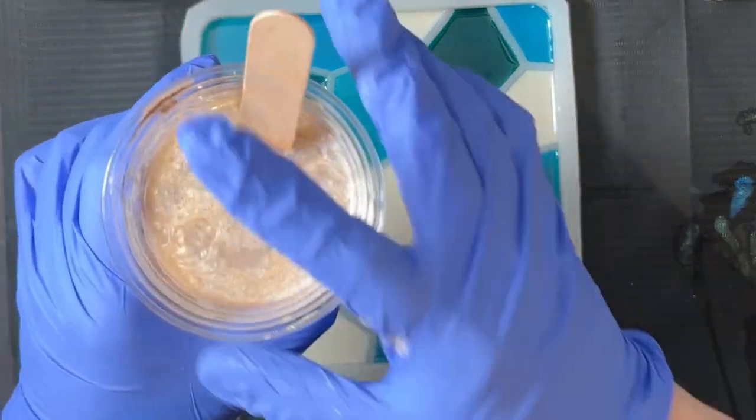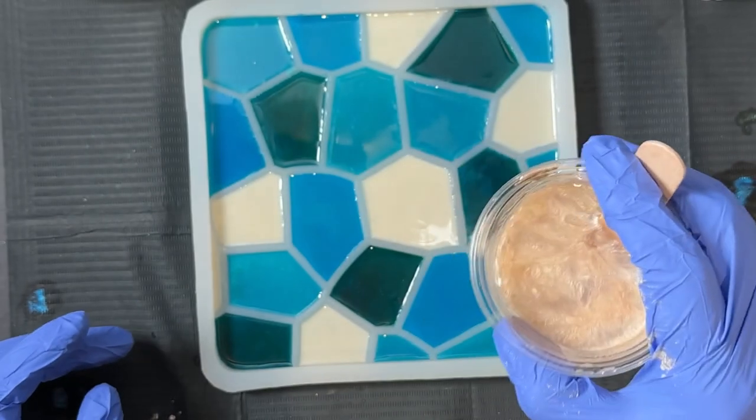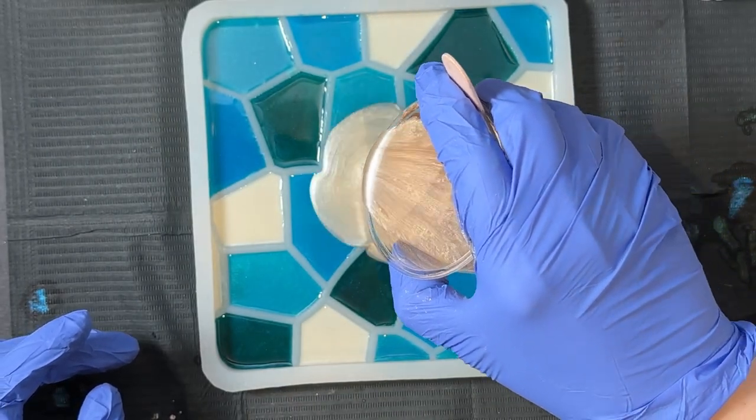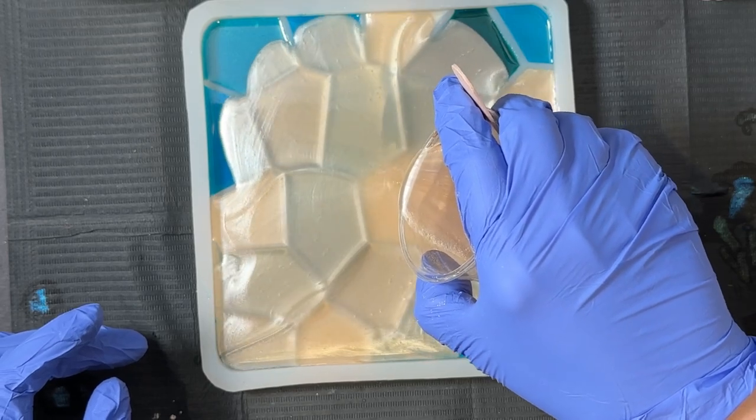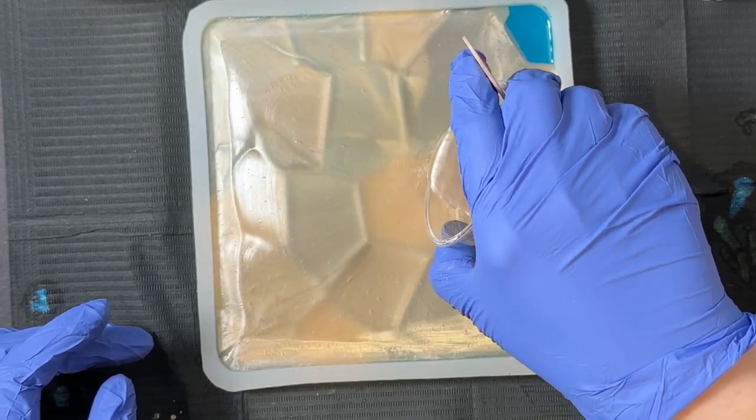And I think that's pretty good, close to a sandish type color. And then I'm just going to back pour this over top of the cured resin, the mosaic tile things that I've already created until the mold is completely full.